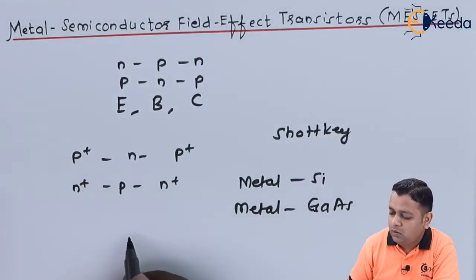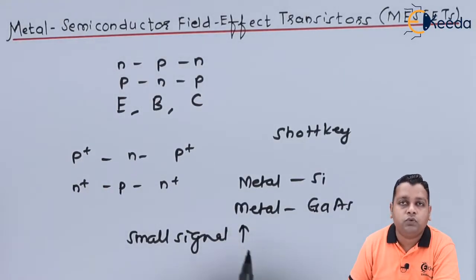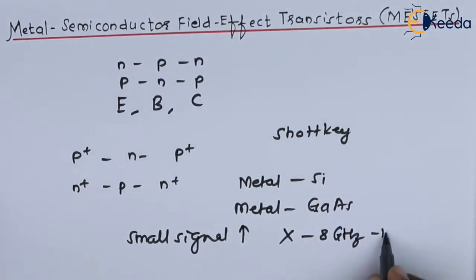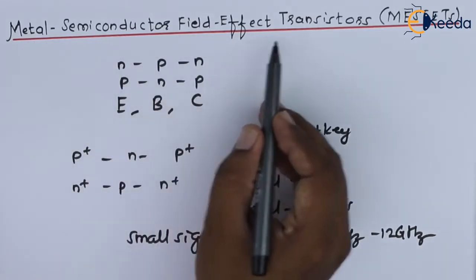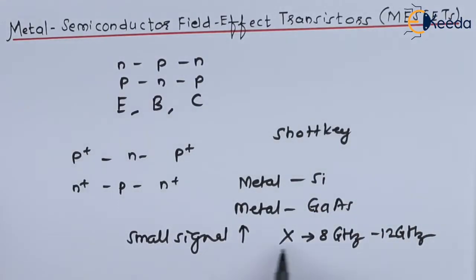Instead of a metal-to-silicon junction, if we use a metal-to-gallium arsenide junction, it offers high frequency operation. A small signal can be amplified up to the X-band range — that is, 8 GHz to 12 GHz — which is the microwave range. Hence, metal-to-gallium arsenide MESFETs are very popular. They also offer a low noise figure and good power handling capacity.